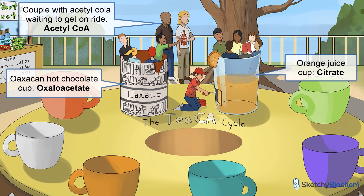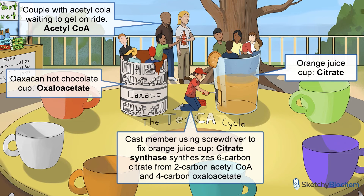Citrate sounds like citrus, so of course we've included a cup of orange juice. And what classically goes well with OJ? Six people, of course. The enzyme that synthesizes citrate is citrate synthase, represented by a cast member fixing that orange juice cup. Keep in mind that he's using a screwdriver — this will be important soon.